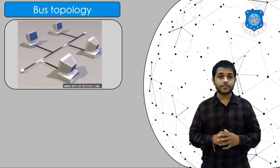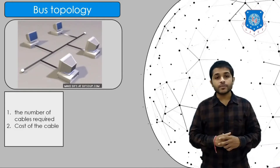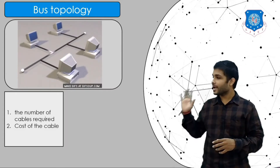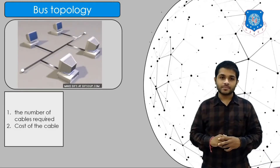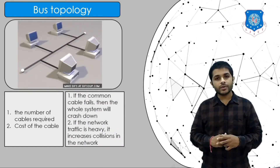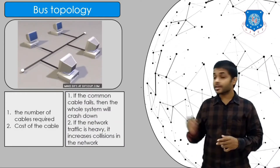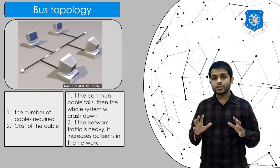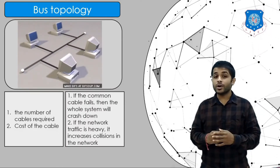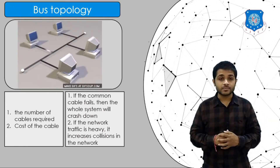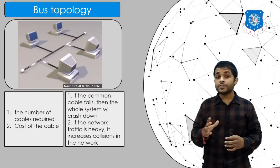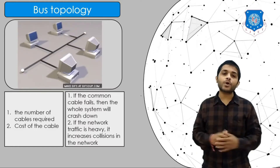This means that security is a main concern in bus topology — when only one device is sending, all devices receive. The advantage is that the number of cables required is very less, since n number of devices can be connected to a single cable, and the cost is also less. The disadvantage is that if the common cable fails, the whole network crashes. Also, if all devices send data at the same time, there will be a collision and no device will be able to receive data properly.